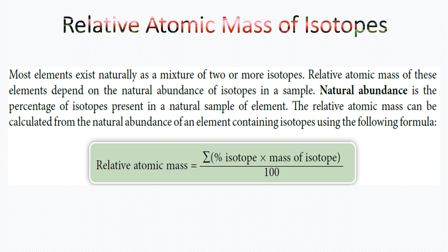Most elements exist naturally as a mixture of two or more isotopes. The relative atomic mass of these elements depends on the natural abundance of isotopes in a sample. Natural abundance is the percentage of an isotope present in a natural sample of an element. The relative atomic mass can be calculated from the natural abundance using the following formula.